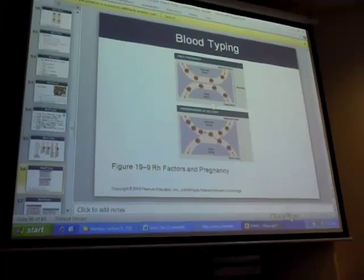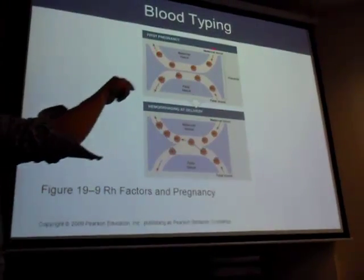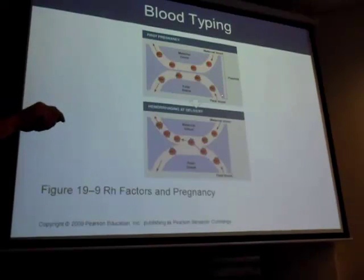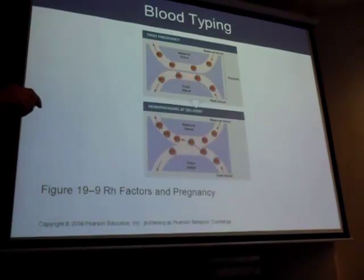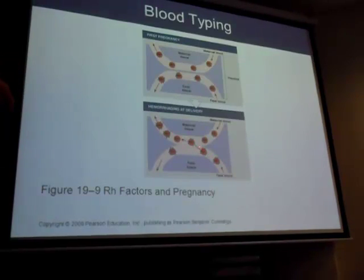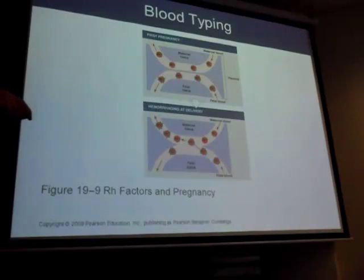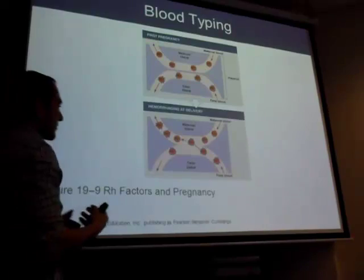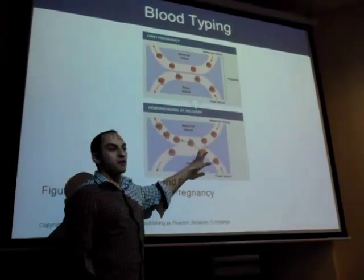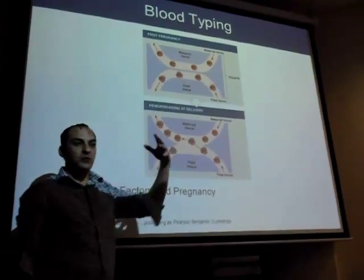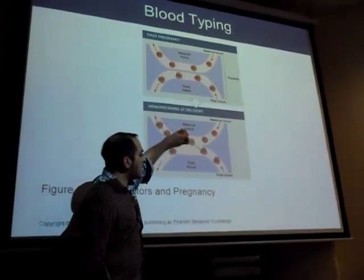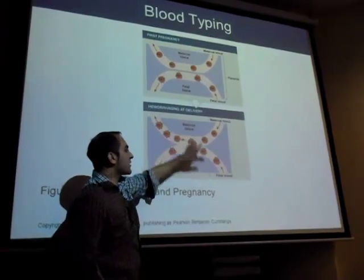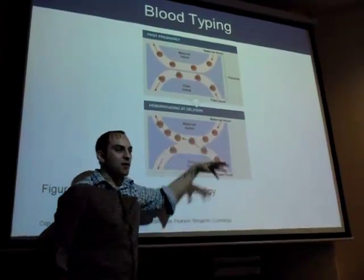This diagram shows the mother's blood during the first pregnancy - she's RH negative. The fetal blood shows the RH antigen. At the placenta, no blood cells go back and forth. But at delivery, blood vessels burst and blood starts mixing. A fetal red blood cell enters the maternal circulation, and the mother's body - just like with a bacteria or virus - makes anti-RH in response, because something foreign has entered.